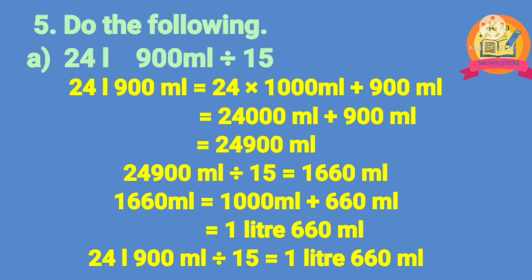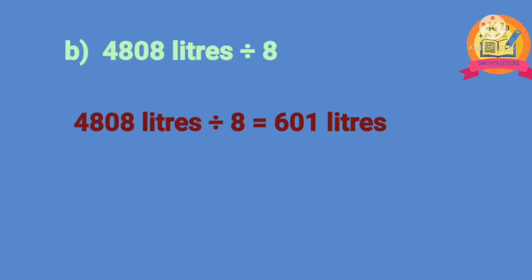Fifth problem: do the following divisions. Problem A: 24 liters 900 ml divided by 15. Convert 24 liters 900 ml into ml first, giving 24,900 ml. By dividing 24,900 ml by 15, we get 1660 ml. Converting 1660 ml into liters gives 1 liter 660 ml. Problem B: 4808 liters divided by 8. After dividing, we get 601 liters. That is, 4808 liters divided by 8 is equal to 601 liters.